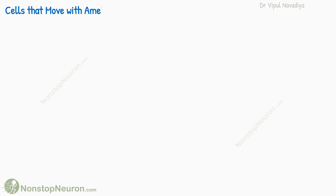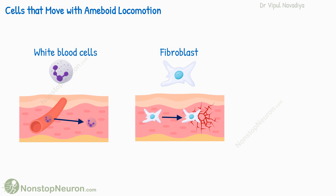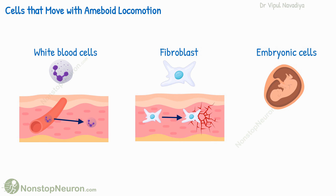The cells migrating with amoeboid locomotion are as follows. First, white blood cells — they are the most common type of cells showing amoeboid locomotion in the body, and their movement out of blood vessels into the tissue occurs by amoeboid movement. Fibroblasts move into damaged areas for repair by amoeboid movement. Lastly, during the development of the embryo and fetus, embryonic cells need to move long distances from their site of formation to the area being developed, and this movement occurs by amoeboid locomotion.